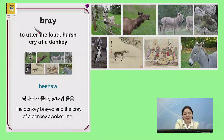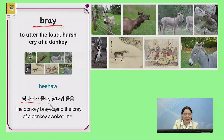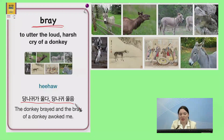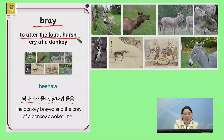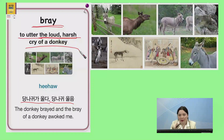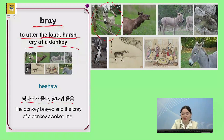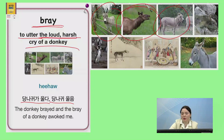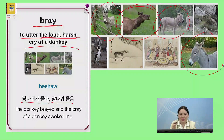The next word is bray. Bray. 한국말로는 당나귀가 울다, 당나귀 울음. 영어로 설명하면 to utter the loud, harsh cry of a donkey. 당나귀처럼 우는 거예요. 그런 소리 만드는 거예요. So a donkey brays. Sometimes moose or deer bray — they make the noise. That would be a bray.